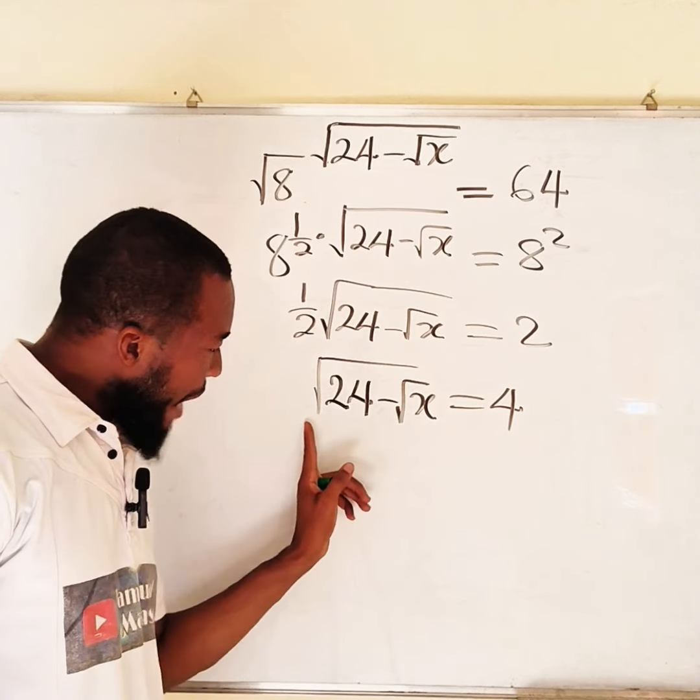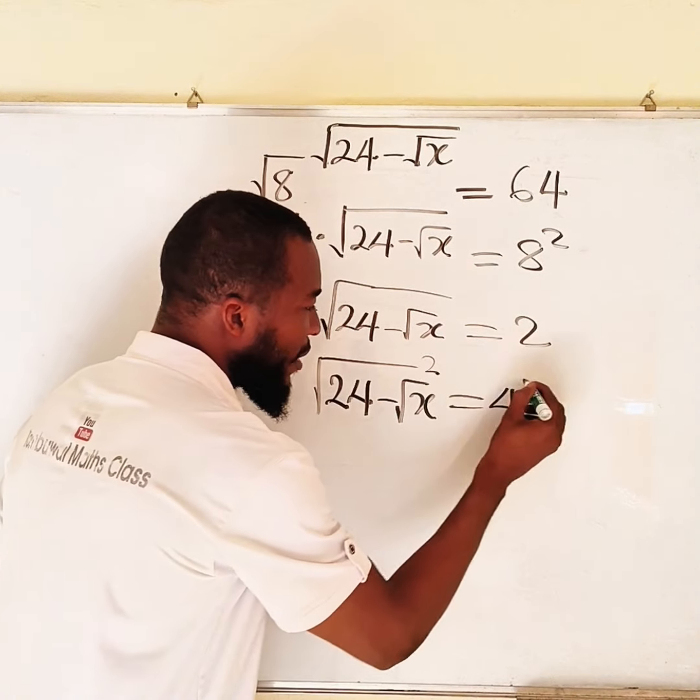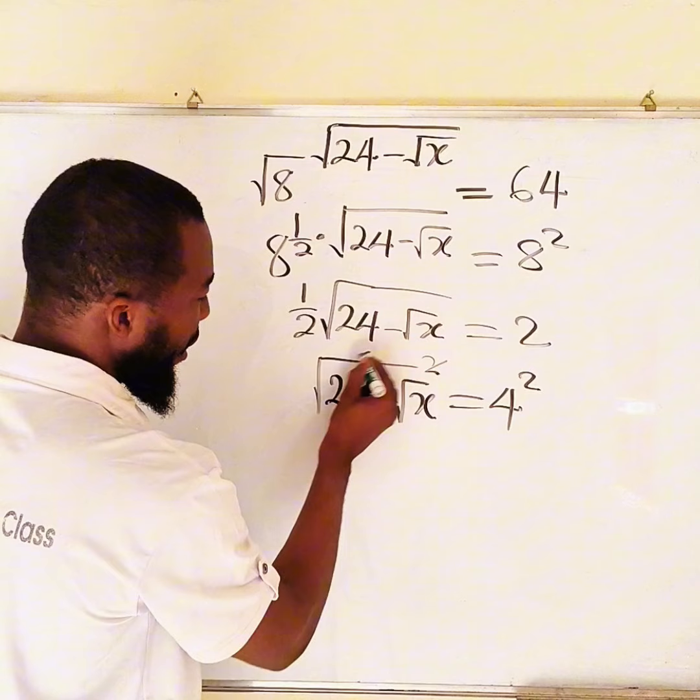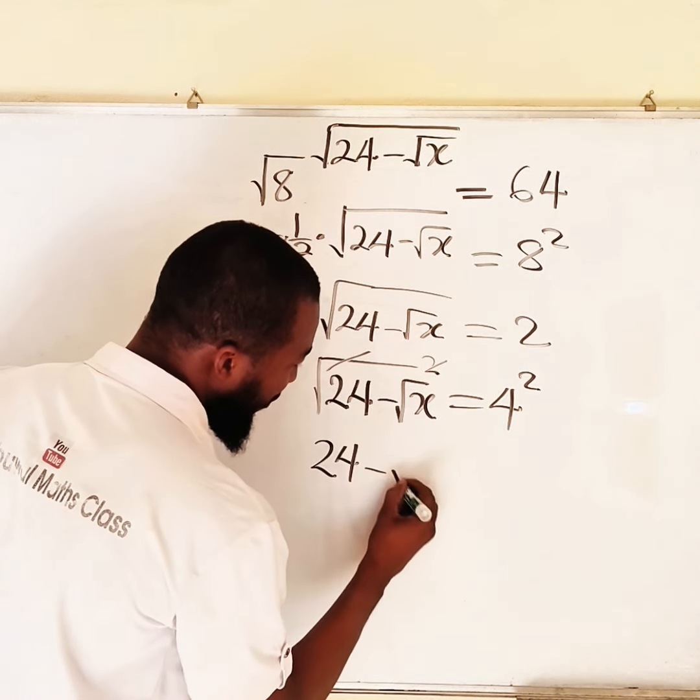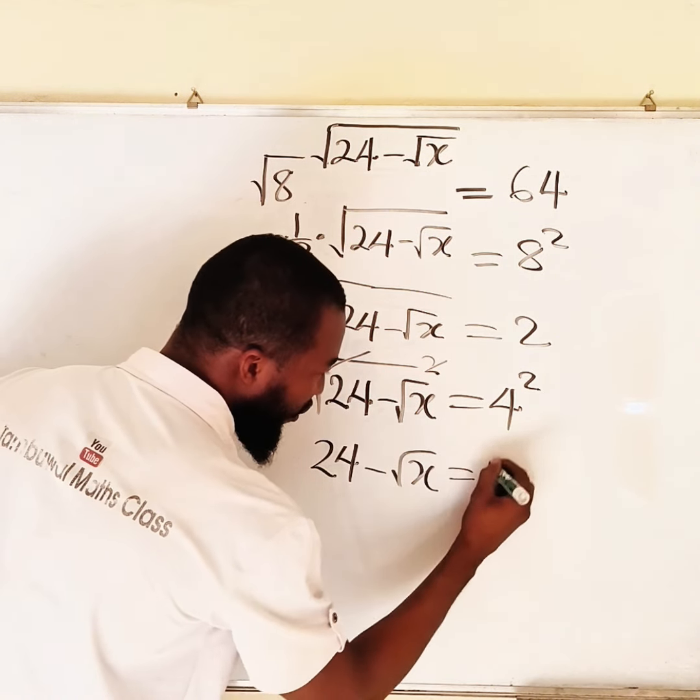To get rid of this outermost square root, you can square this and square this. This will cancel this, leaving 24 minus square root of x equal to 16.